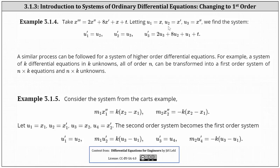Now we write a first-order system. Notice if u1 equals x and u2 equals x prime, we begin with u1 prime equals u2. And if u2 equals x prime and u3 equals x double prime, we also have u2 prime equals u3. Moving to the differential equation, x triple prime is equal to u3 prime, which equals 2x double prime, which is 2 times u3, plus 8x prime, which is plus 8u2, plus x, which is plus u1, and then we have plus t. Notice now we do have a first-order system.